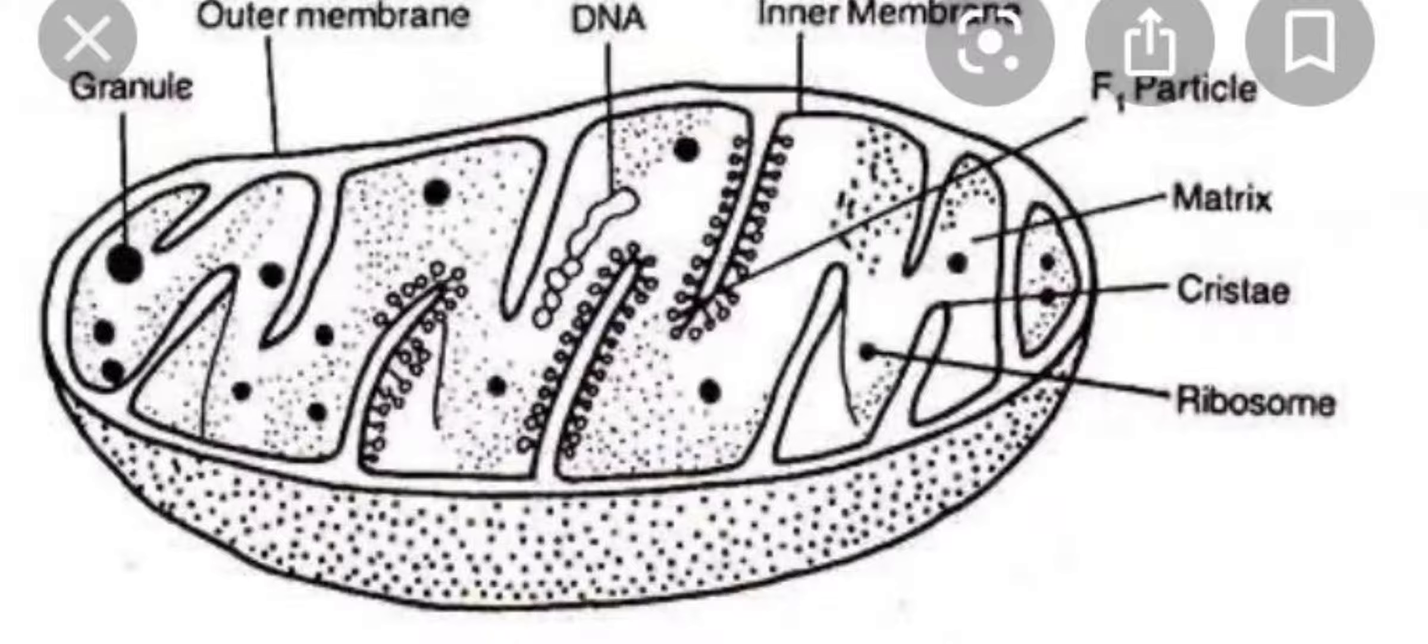Now they are basically found in those cells whose metabolic state is very active, so they are numerous in number in liver and muscle cells. When you talk about this structure, it is a sausage-shaped structure having a double wall, that is outer membrane and inner membrane.